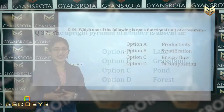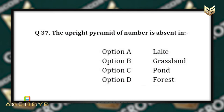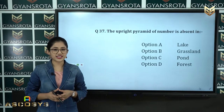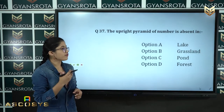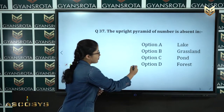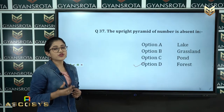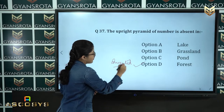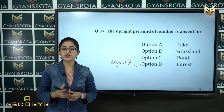Question 37: The upright pyramid of number is absent in option A: Lake, option B: Grassland, option C: Pond, option D: Forest. This is from the chapter Ecosystem. The correct answer is option D, Forest, because in a forest the pyramid of number is inverted.